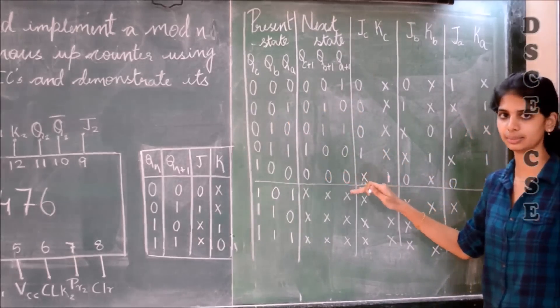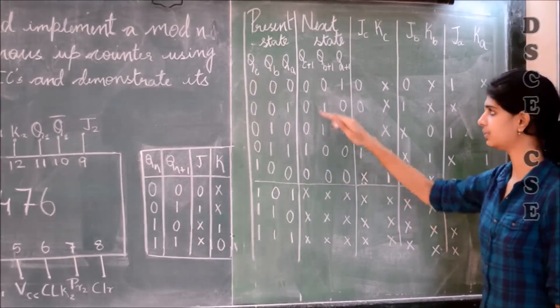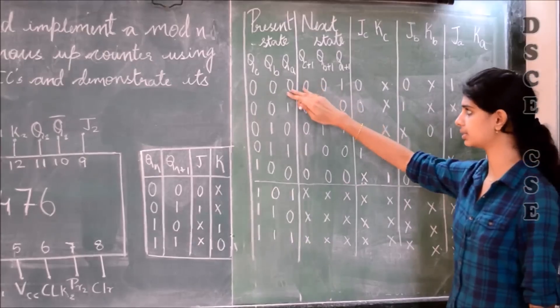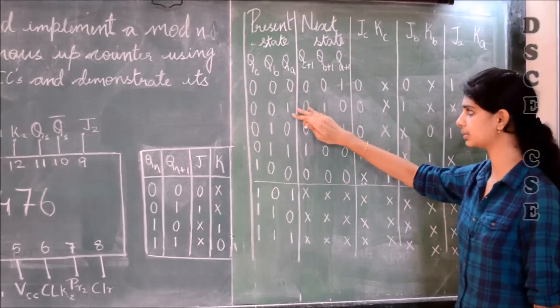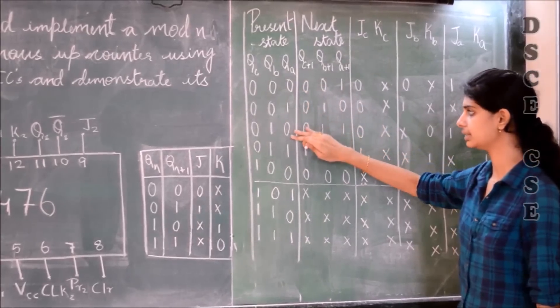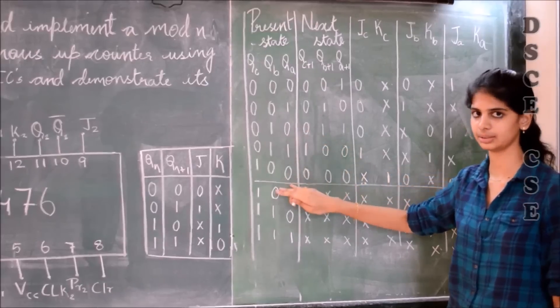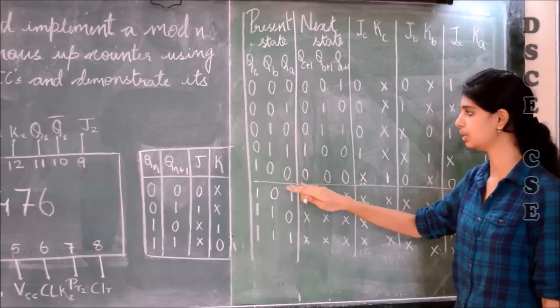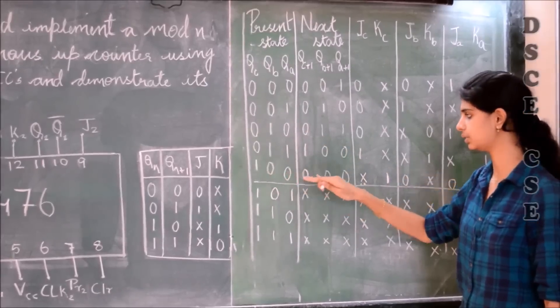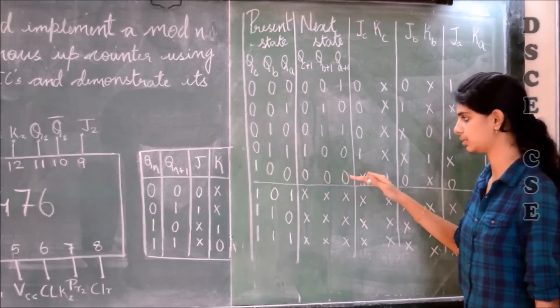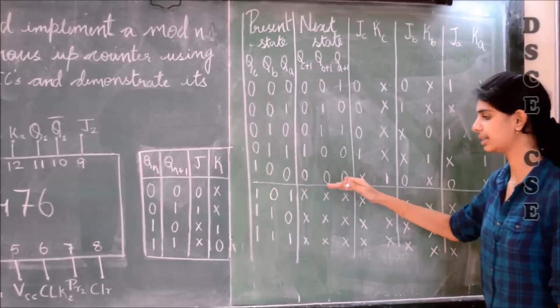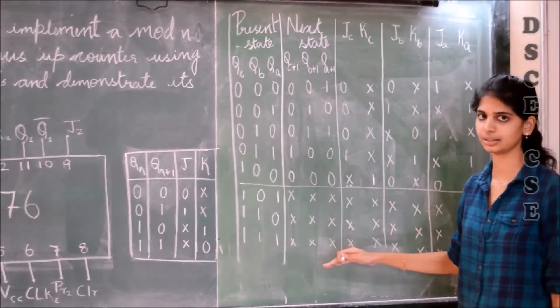Here we are considering mod-5, not mod-8. Hence we only consider states 000, 001, 010, 011, and 100. For state 100, the next state goes back to 000. Hence the remaining states are don't care.